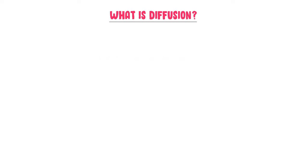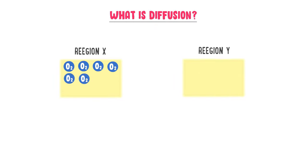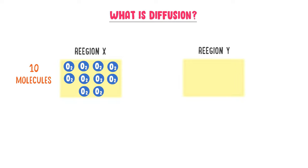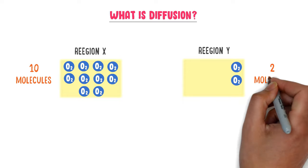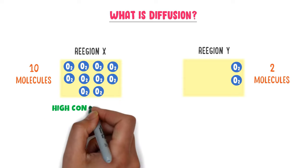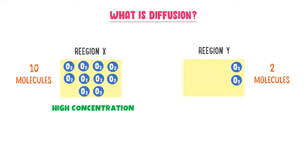Firstly, let me teach you what diffusion is. Consider region X and region Y. In region X, there are 10 molecules of oxygen gas present, while in region Y, there are 2 molecules of oxygen gas present. We say that region X has a high concentration of oxygen gas because it has 10 molecules.